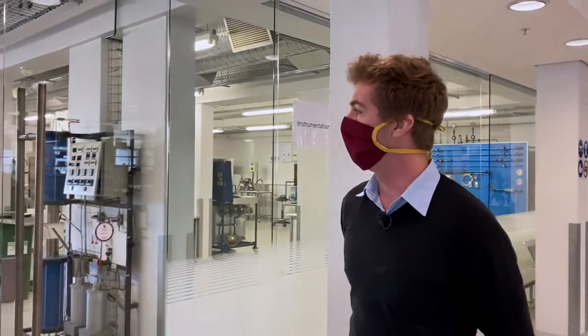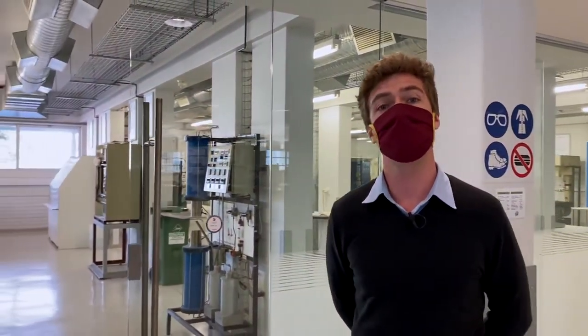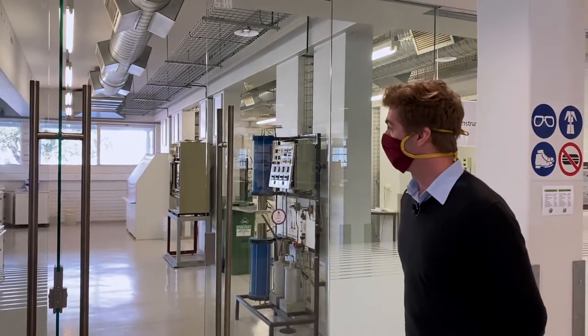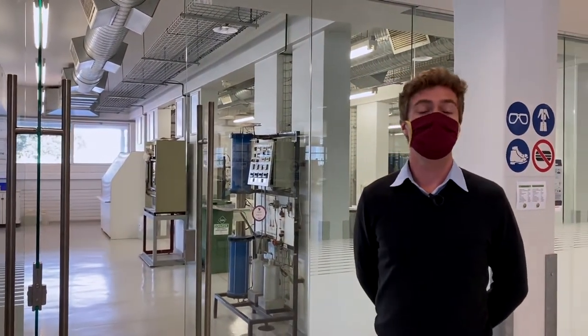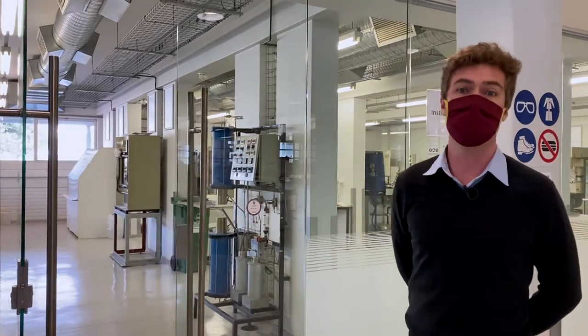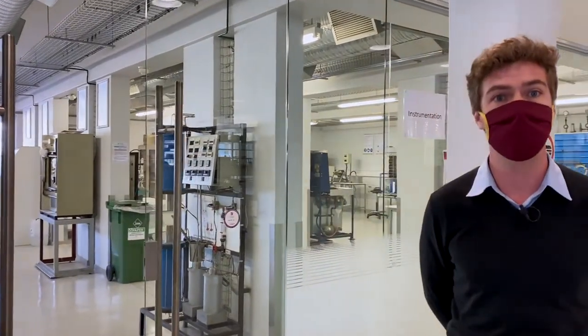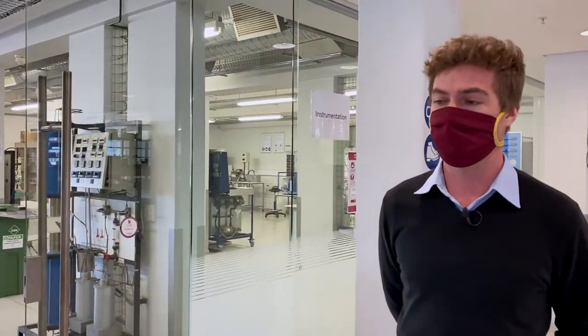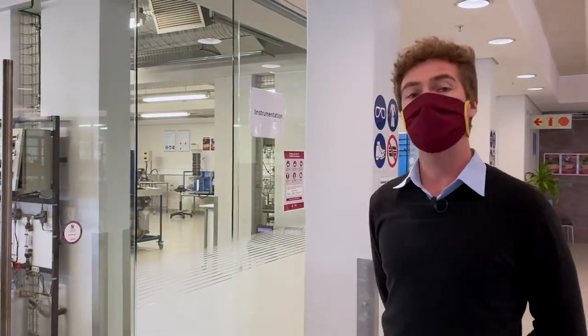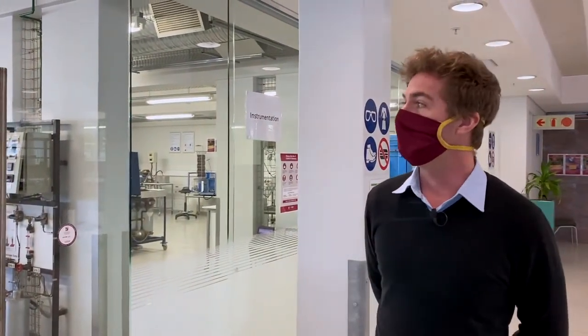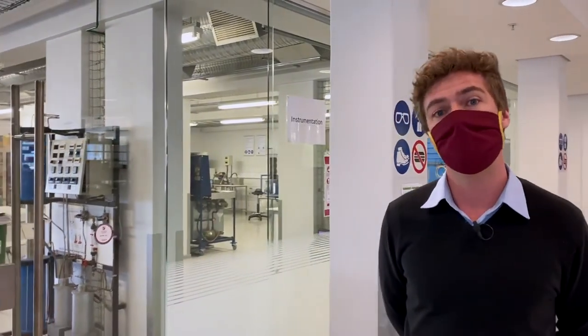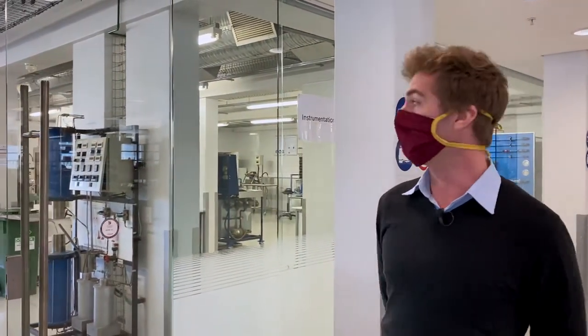Here we have the undergrad experimental laboratories where from your second year onwards you will do lots of experiments to understand how the equipment that you use as a chemical engineer works. You'll have pumps and pipes, you'll design and experiment on reactors of various types, you'll look at heating and cooling systems, distillation columns, and a number of different experiments, all set up in here in really nice facilities.